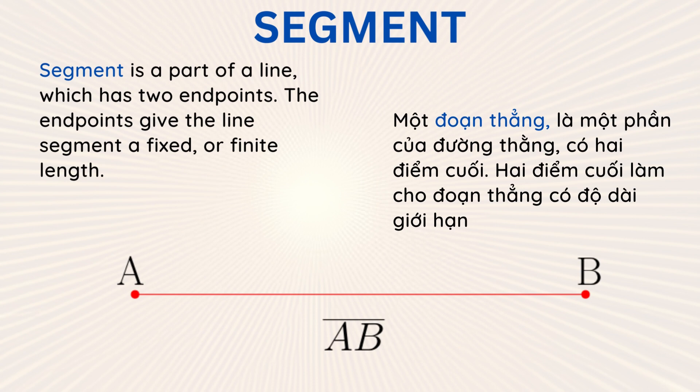A segment is a part of a line which has two endpoints. The endpoints give the line segment a fixed, or finite length. In the picture, we could see a segment AB, which is denoted by AB with a line on top of it.